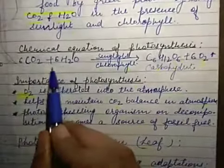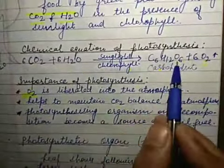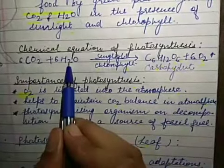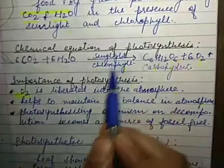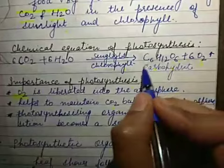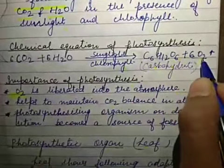Chemical equation of photosynthesis. Here I have written the balanced chemical equation. How to balance chemical equation that you will learn in chemistry. Carbon dioxide that is added with water molecules in the presence of sunlight and chlorophyll. What will synthesize? The complex molecules that will synthesize, that is carbohydrate, and oxygen is liberated as a byproduct.